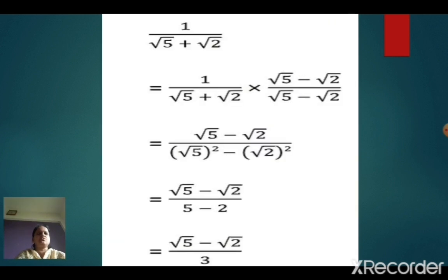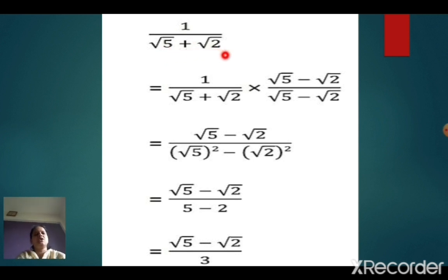We will solve more sums to understand. This is also a similar type of sum. The question is 1 upon root 5 plus root 2. Now you all understand the concept of conjugate. The conjugate of root 5 plus root 2 — the number remains as it is, only we change the sign — so it will become root 5 minus root 2. We multiply numerator and denominator by root 5 minus root 2 upon root 5 minus root 2.